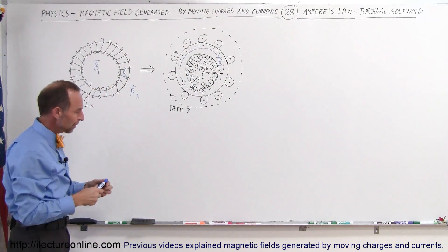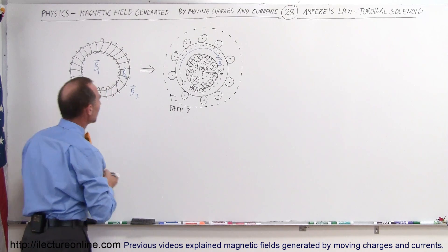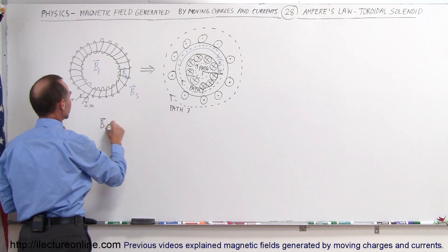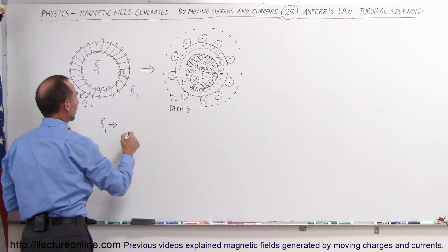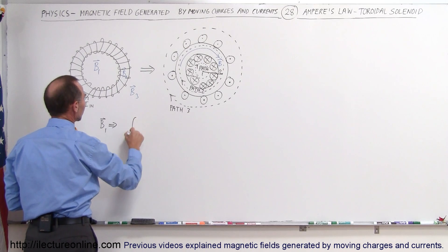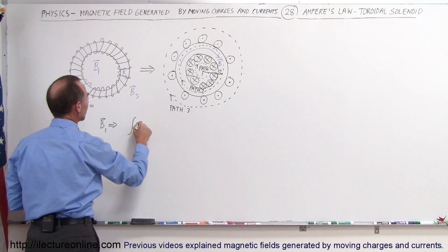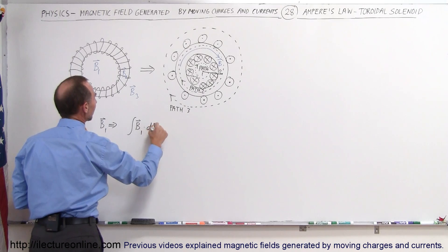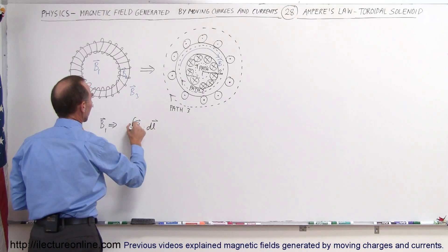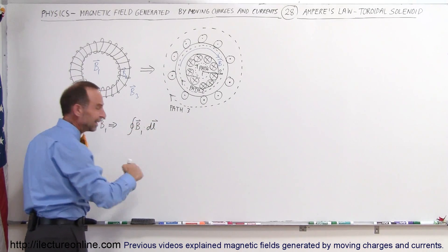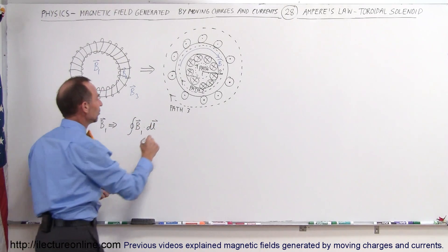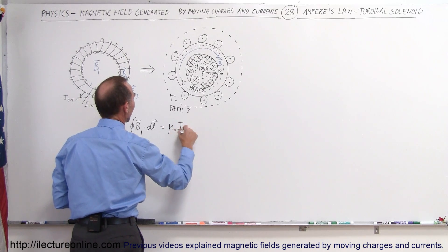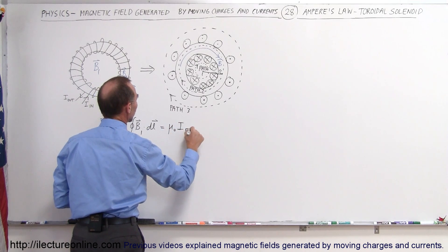Using Ampere's law we're going to find B1 first. We say that the closed loop integral of B1 · dL is equal to μ₀ times I enclosed.